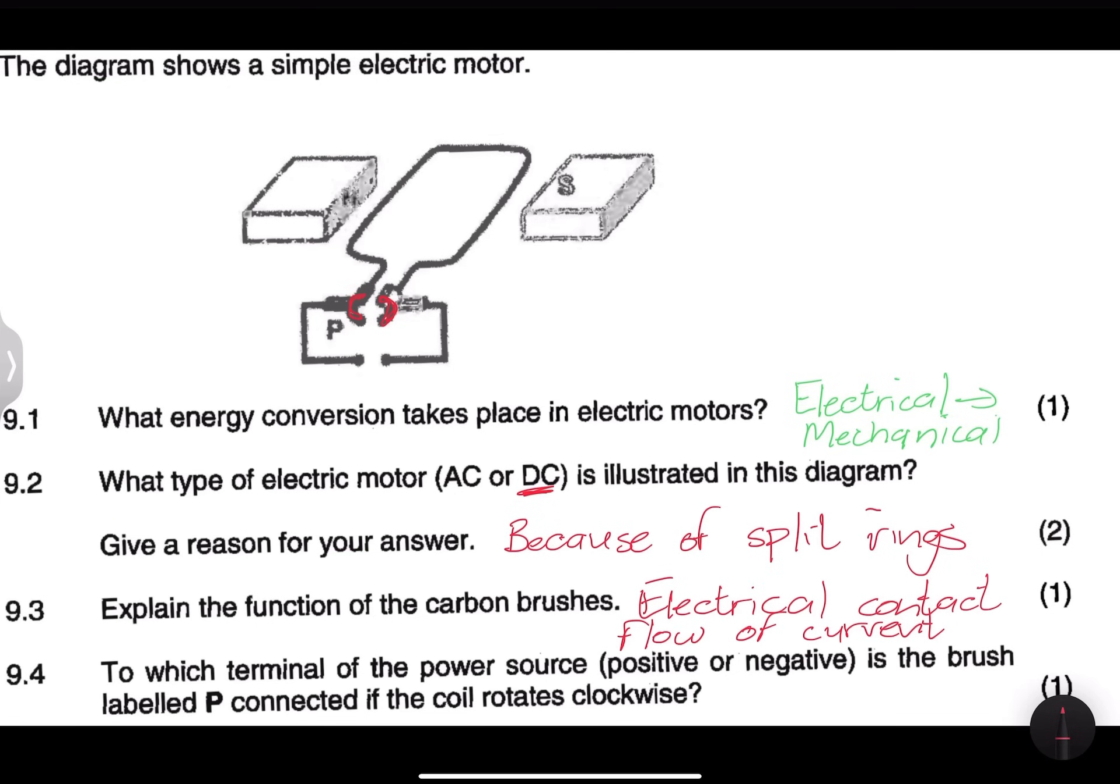Now they ask us to which terminal of the power source, positive or negative, is the brush labeled P connected if the coil rotates clockwise? Now, I want you to please remember, ladies and gents, when it comes to the rotation. So it means if I'm looking at this side here, if it is moving clockwise, it means that in this case, it is going or it is moving upwards on the side.